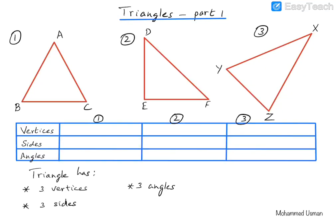The next chapter that we are going to study is on triangles and we will begin the discussion of this chapter by first defining what a triangle is. A triangle is a closed figure which contains three vertices, three sides and three angles. We have shown here three different triangles and let us try to identify the three vertices, three sides and three angles for each of those triangles.